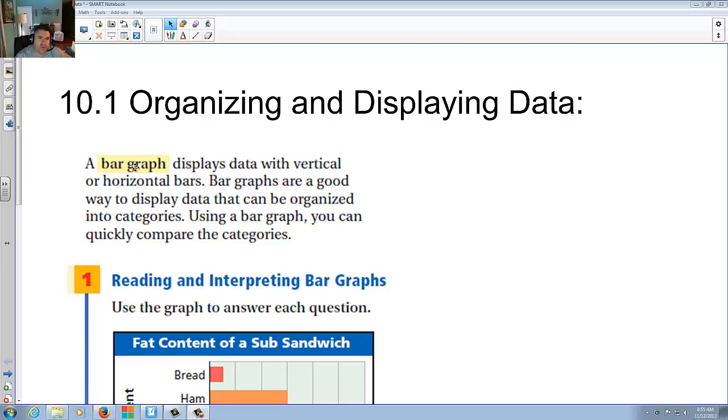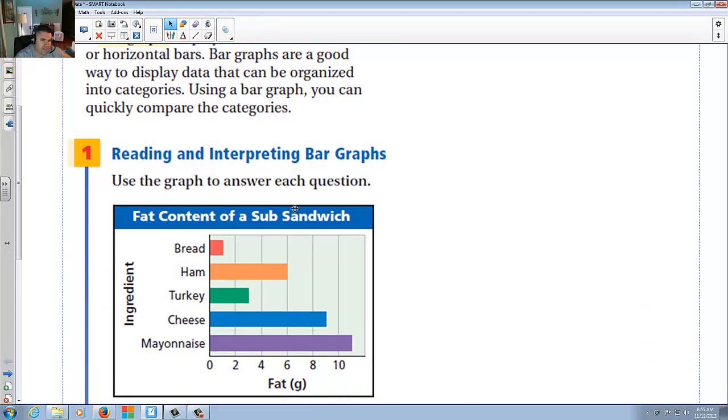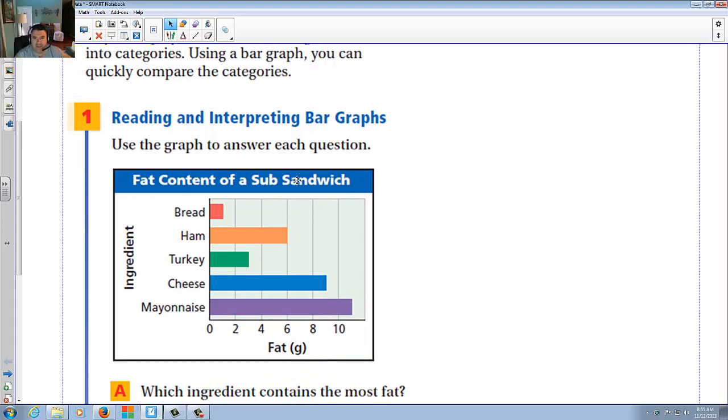The displaying data, we're going to start with a bar graph. A bar graph simply displays data with vertical or horizontal bars. Take a look down here. They're talking about fat content of a sub-sandwich. You have bread, ham, turkey, cheese, and mayonnaise.